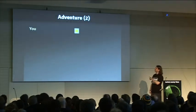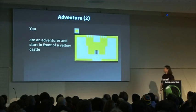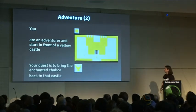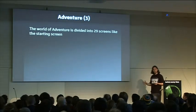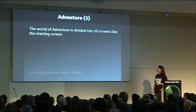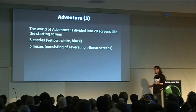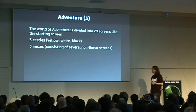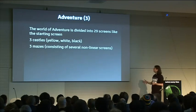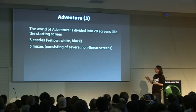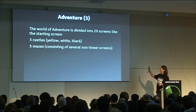How do you play it? This is you. You start as an adventurer in front of a castle, and your job is to bring the enchanted chalice back to that castle. For this, you have a world consisting of 29 screens. There are three castles, three mazes consisting of several non-linear screens — so when you move out to one level, you can get into the same level if you enter to the right. You've got to learn your way by this turn, that turn, and not by just thinking of it as a plain area.